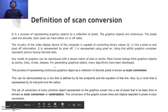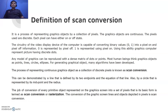This is the definition of scan conversion. It is a process of representing graphic objects by a collection of pixels. The graphic objects are continuous, while the pixels used are discrete. Each pixel can either have an on state or an off state. The pixels are square in shape, and as we saw in the last video with the Mario game, the characters had staircase-like edges rather than a smooth finish.